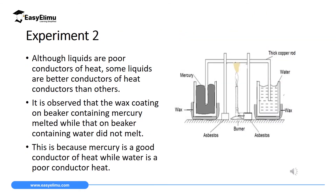Do all liquids conduct heat at the same rate? No. To investigate this, we consider two beakers: beaker one containing mercury, and beaker two containing water. We connect both beakers with a metal rod of the same material throughout, so it conducts heat at the same rate. The distance from the heating point to each beaker is the same.